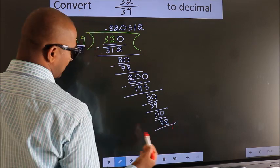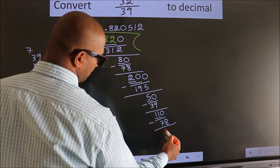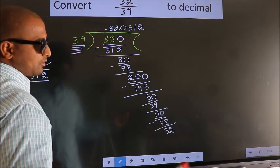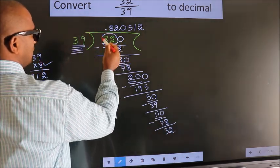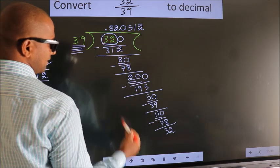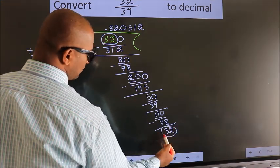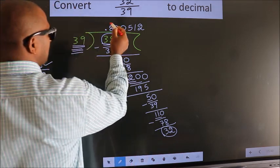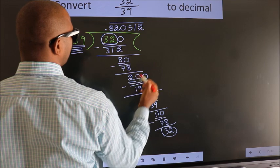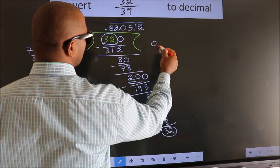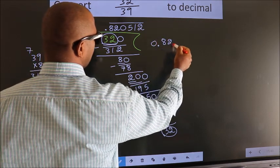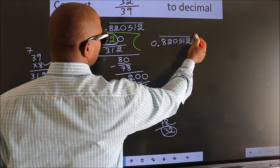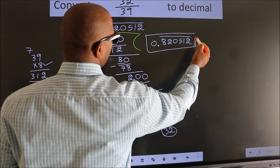Now you observe. Here we have 32, and we got 32 again. That means we get bar on these numbers. Therefore our answer is 0.820512, bar on these numbers. This is our answer.